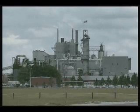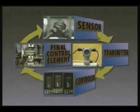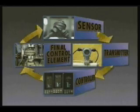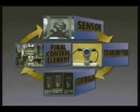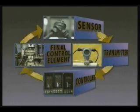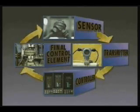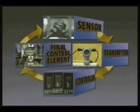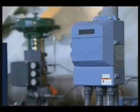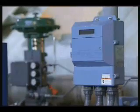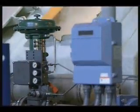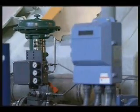Process control depends on the integrity of communication between instruments. Information travels through the loop in signals which represent the value of the process variable or the output of the controller. These signals must be uninterrupted if the loop is to work properly. When an instrument transmits electrical signals, those signals are sent through conductors to other process instruments. In this presentation you will learn about the connections required to keep electrical signals flowing reliably.